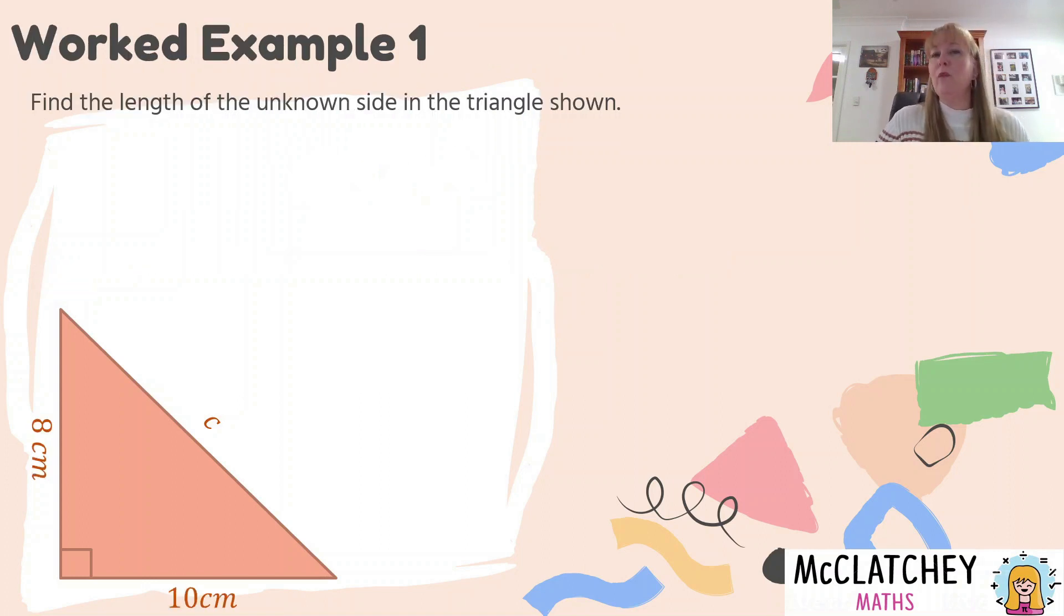So we're going to do a couple of worked examples with this now. We need to find the length of the unknown side in the triangle shown below. You can see that they've already labeled the unknown side with c, and that makes it really easy for us to substitute that into the formula. And we've got two other sides of our right-angled triangle that are eight centimetres and ten centimetres. Okay, so step one, and we're going to be basically following some steps today. I always like these steps to be the same steps whenever you're using a formula. So the first step is write the formula down. And we've just learned that formula, c² = a² + b².